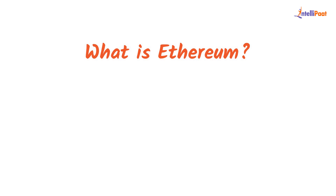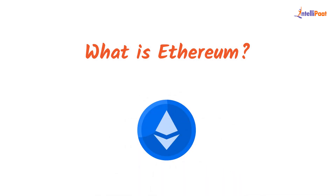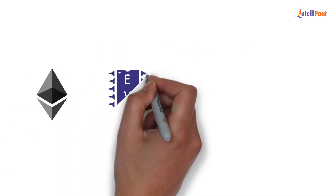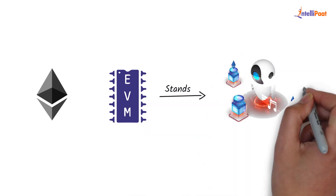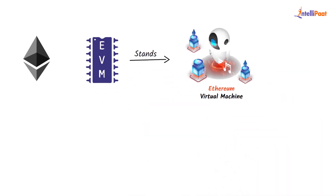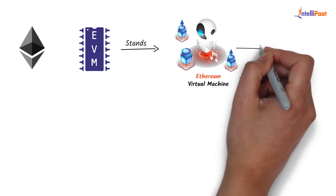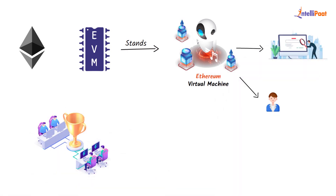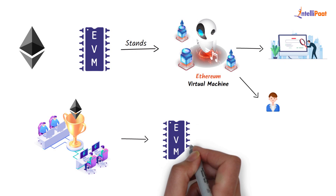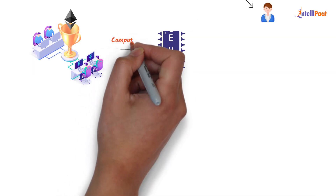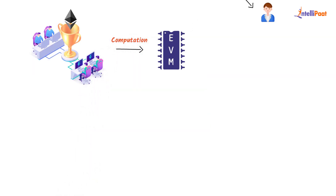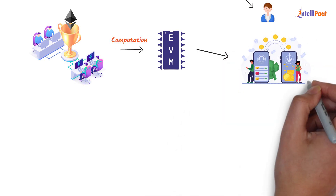That leads us to what is Ethereum. In the world of Ethereum, there is an EVM that stands for Ethereum Virtual Machine, which is a single, canonical computer. Everyone participating in the Ethereum network agrees upon the state of EVM and keeps a copy of the state. In addition, any participant can make a request for computation on EVM. These requests are known as transaction requests.